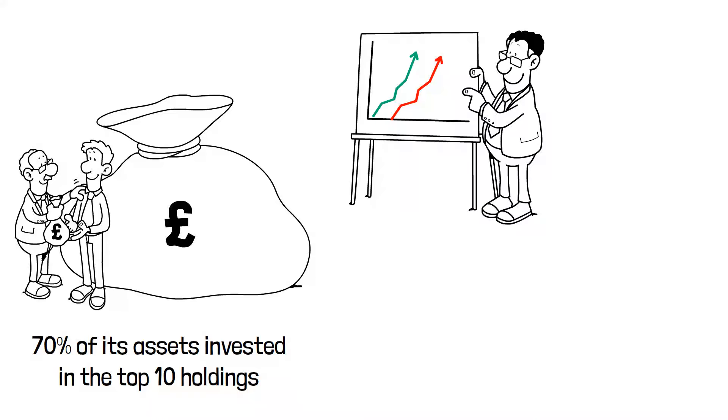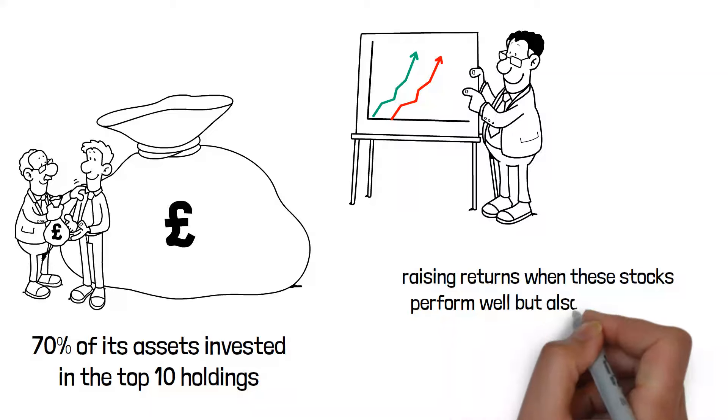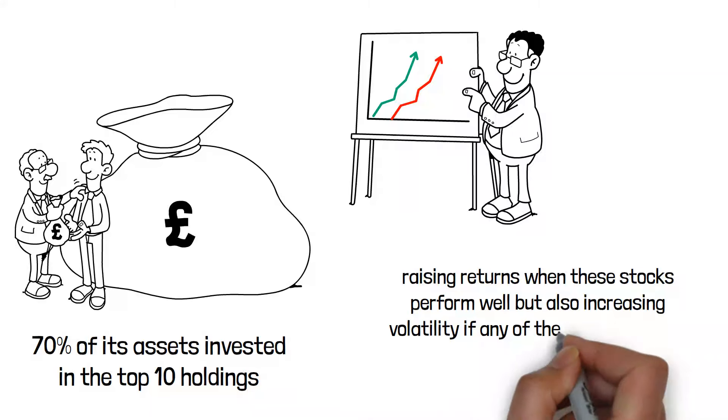This may be a double-edged sword, raising returns when these stocks perform well, but also increasing volatility if any of the big holdings fail.